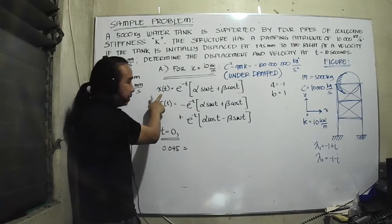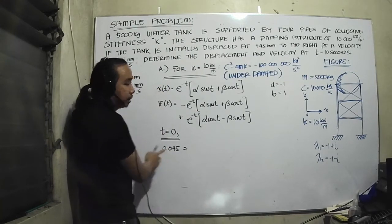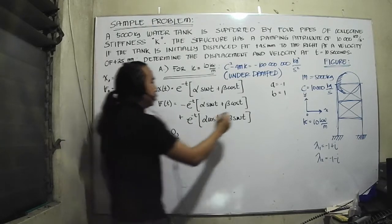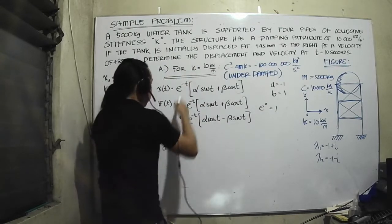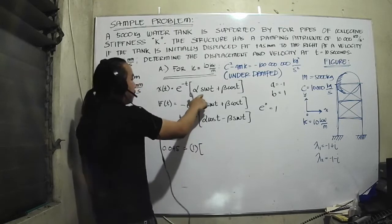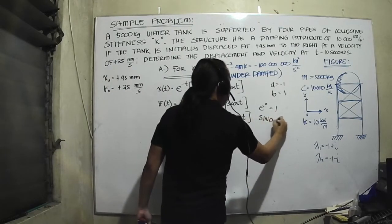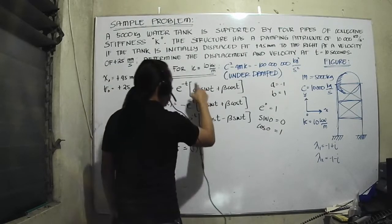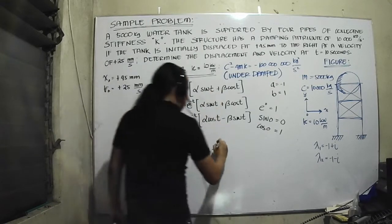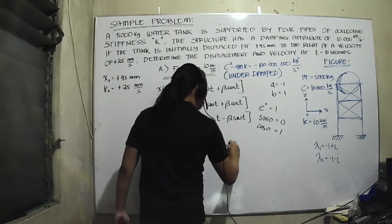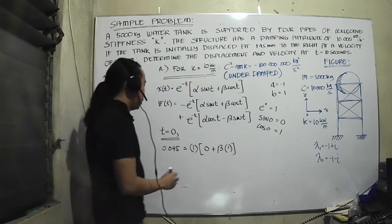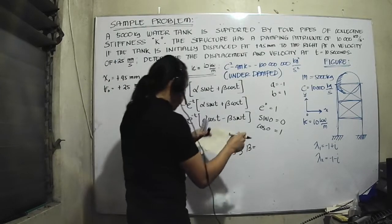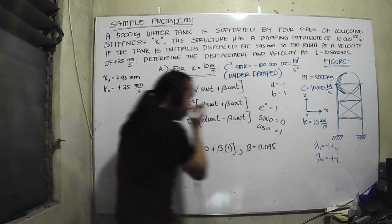When t is equal to 0, e to the power of 0 equals 1. Sin 0 is equal to 0, cos 0 is equal to 1. So sin 0 becomes 0, and we have beta times 1. We can readily say that beta is actually equal to 0.045.